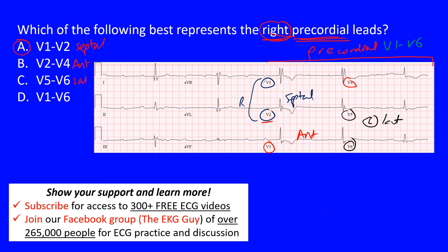So to answer the question — which of the following best represents the right precordial leads — that's V1 to V2, choice A. That's the end of this lecture; I hope you learned something.